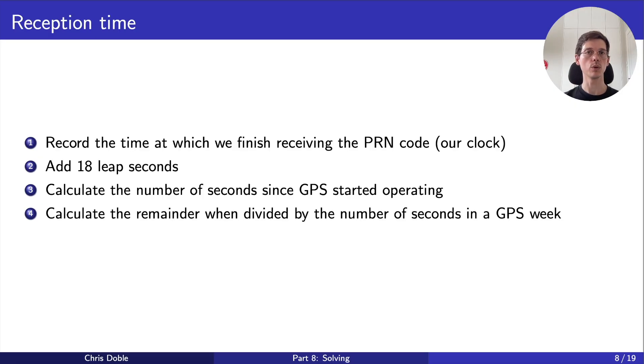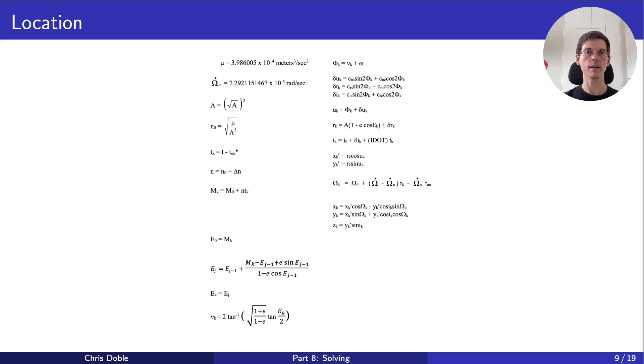The last thing we need to calculate in order to use the pseudorange equation is the satellite's location. This is simply a matter of implementing the equations exactly as they're written in the spec. They look a little intimidating, but you don't actually need to understand them. They use parameters from subframes 1, 2, and 3, so we'll need to wait until we've received those. The only thing I'll note is that the equations include a variable t. They calculate the location of the satellite at this time. As we discussed before, we want to calculate the satellite's location at transmission time, so that's what we should use for this variable.